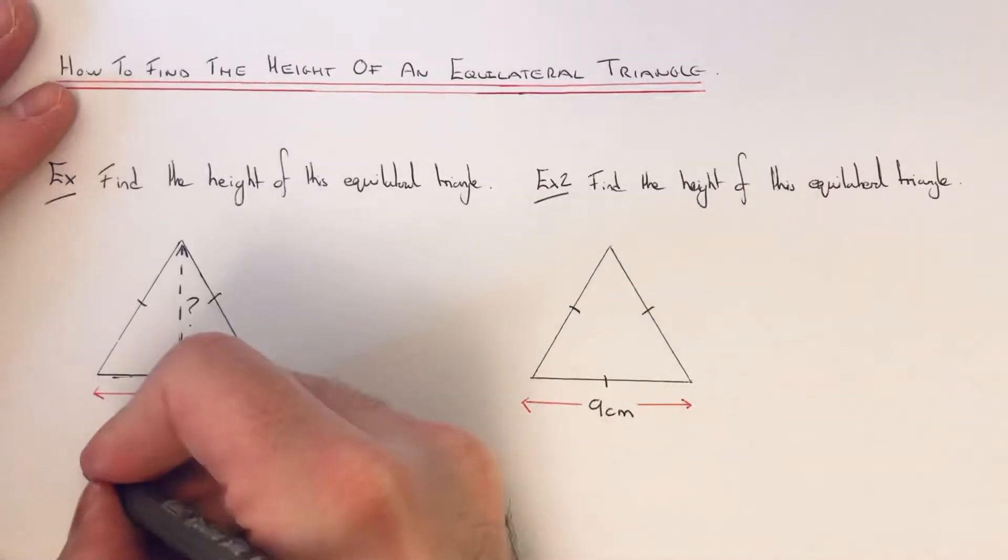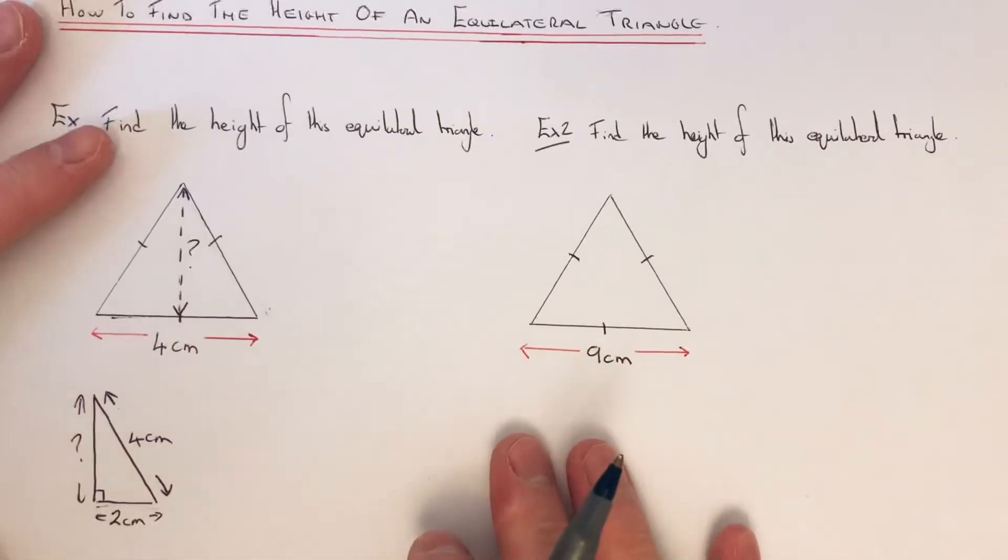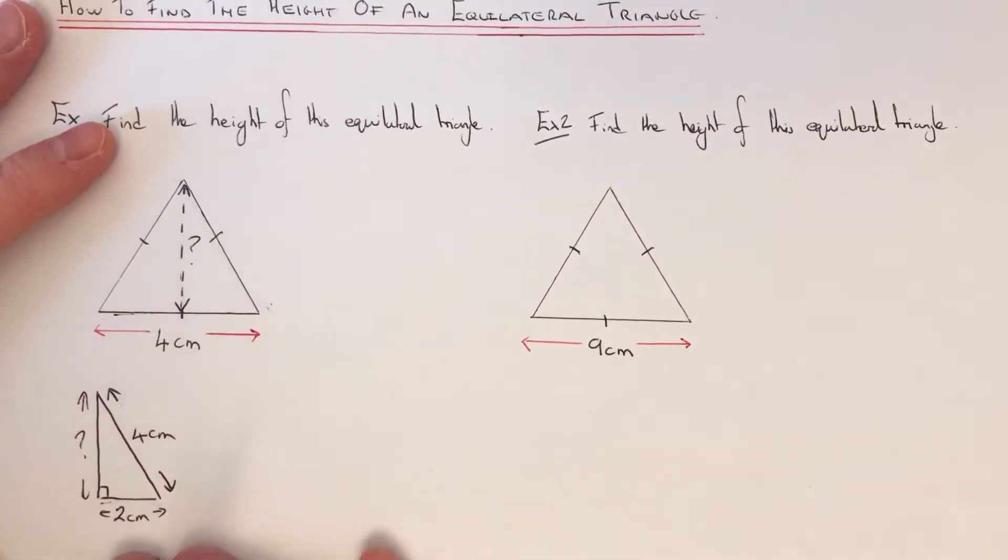So what we've got is a right angle triangle and we just need to figure out the height of the triangle. Okay, so we can do this by Pythagoras because we have two side lengths and we need to calculate the third side.